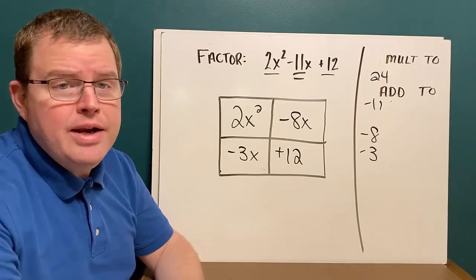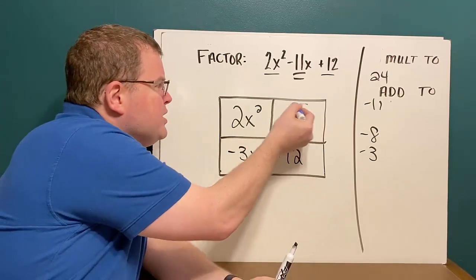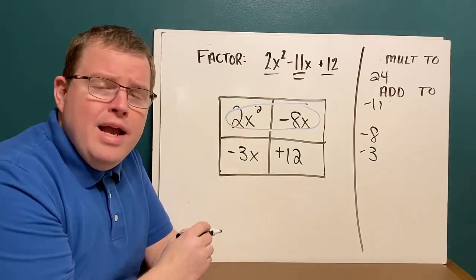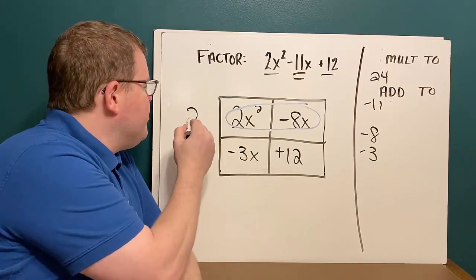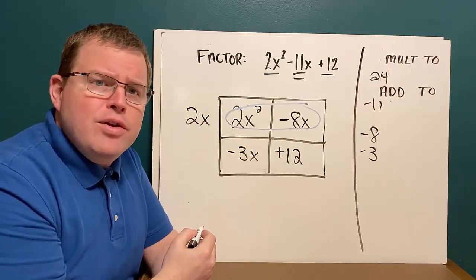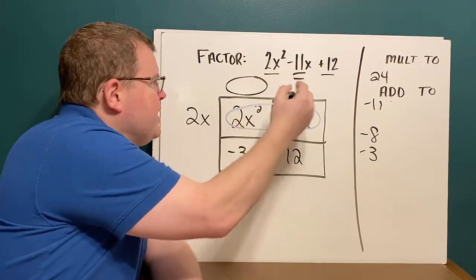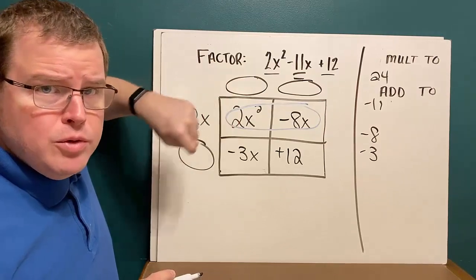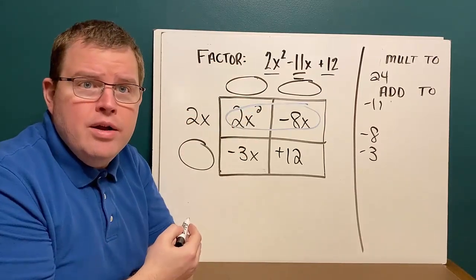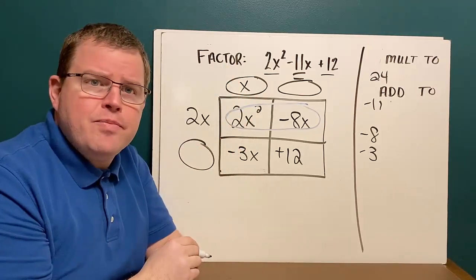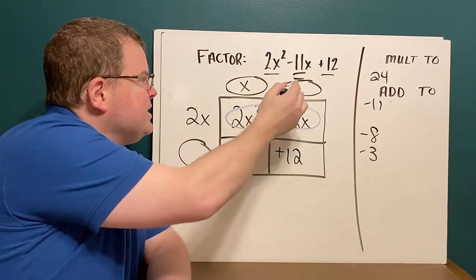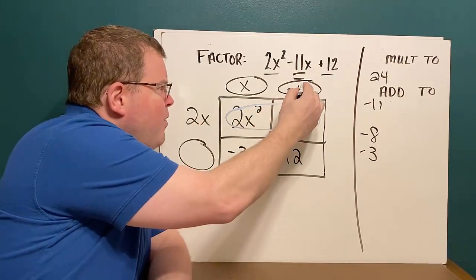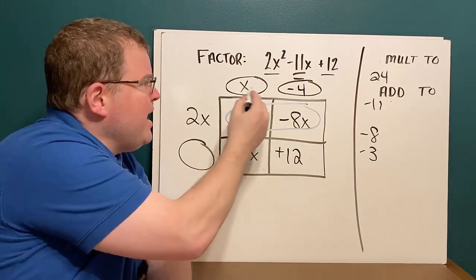Now I begin the process of factoring. I begin by looking across the top and finding the greatest common factor. What is the greatest common factor of 2x squared and minus 8x? It's 2x. So I put 2x out in front. Now I'll use multiplication to fill in the rest of the spaces. 2x times something equals 2x squared — 2x times x. So I put an x there. Then 2x times something is minus 8x — 2x times negative 4 gives me negative 8x.